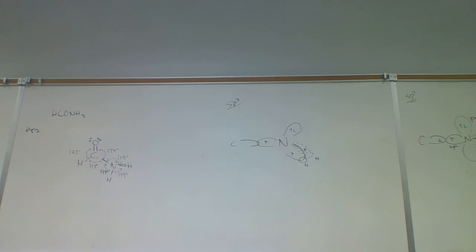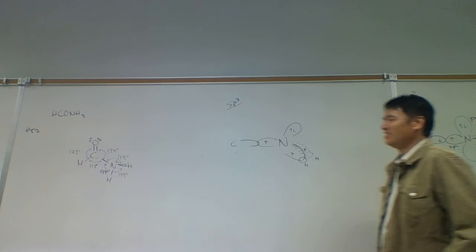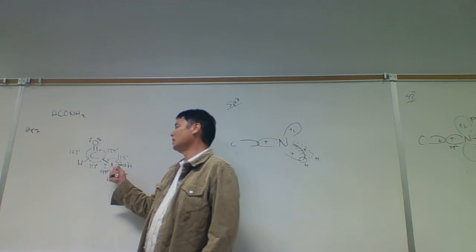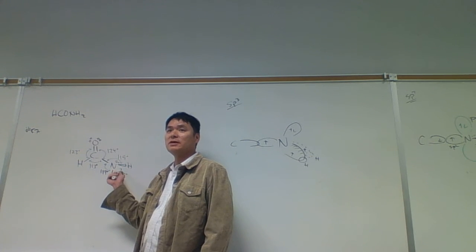You know, if we were to minimize repulsions, we want to go sp3, not sp2, for the hybridization on this nitrogen, or maximize the bonding. And so the reason this becomes sp2 and not sp3 is to maximize the bonding.